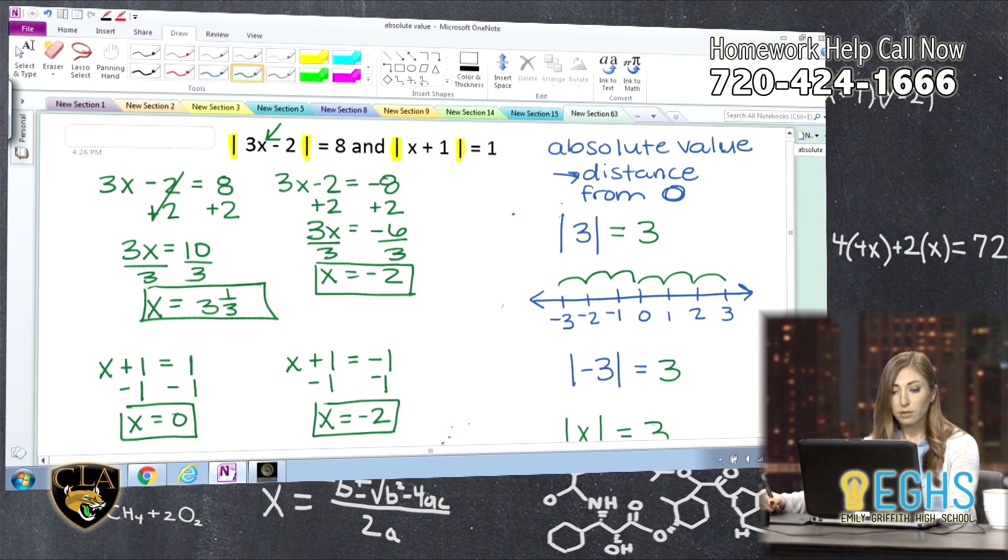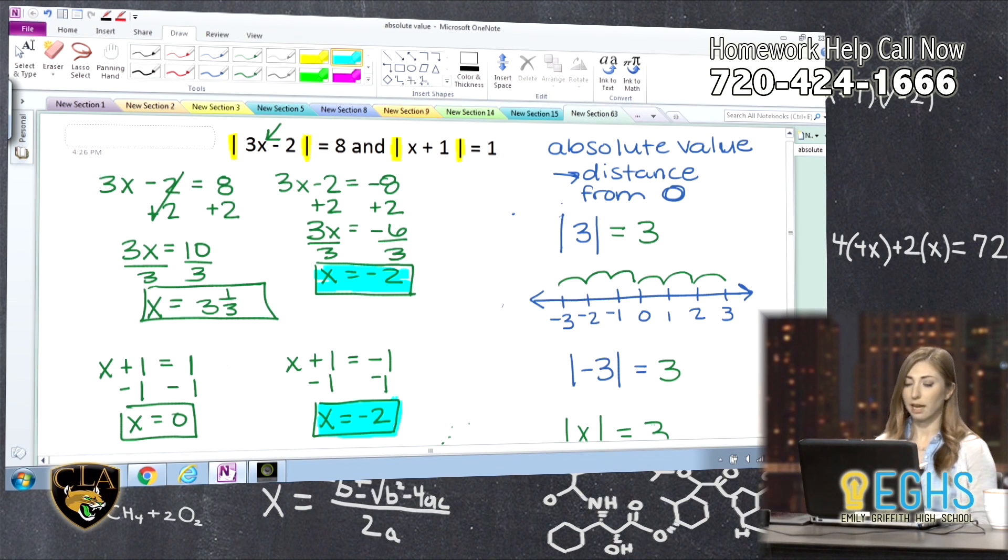Now, although the solutions are not both the same on them, you actually kind of see it right here. This negative two works for that equation, and negative two works for this equation. So if we made x negative two, that would be a solution for both of these absolute value equations.